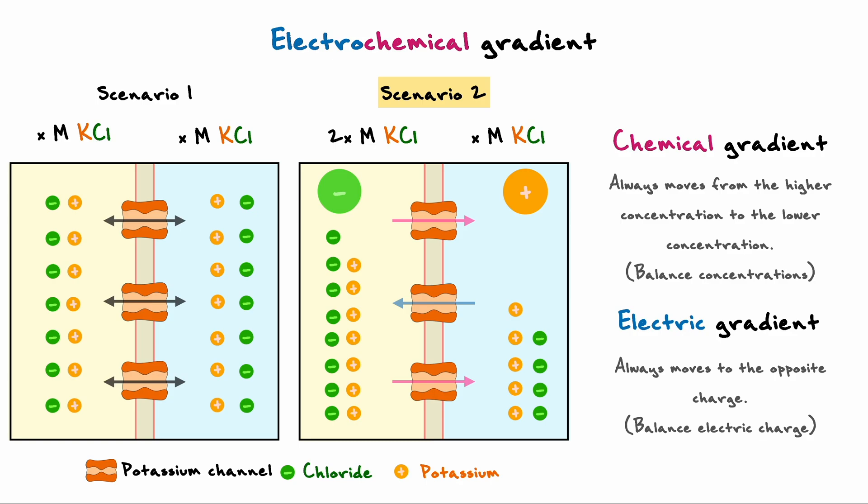In the second scenario, you can see that both the chemical and electrical gradient influence the motion of potassium, and it occurs mainly because there is an uneven distribution in initial concentrations.